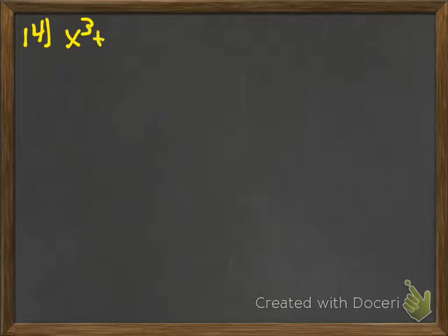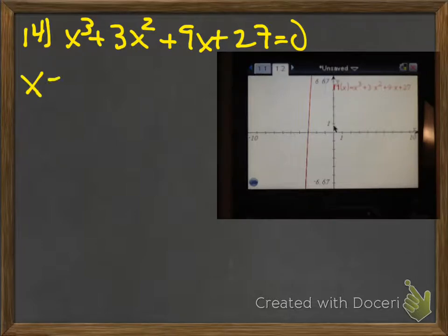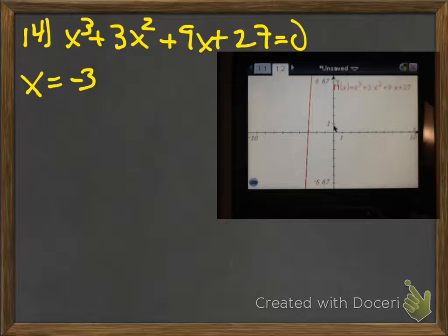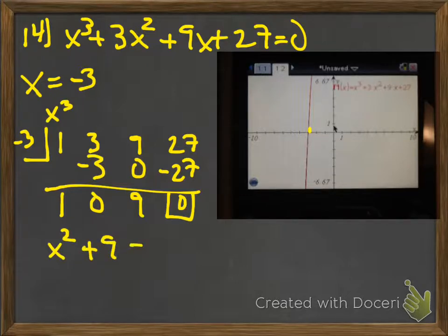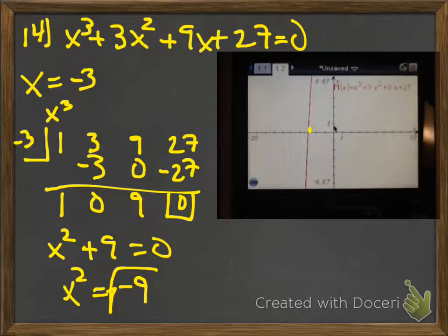Number 14 — graph it. We have x cubed plus 3x squared plus 9x plus 27 equals 0. Looking at the graph, you only see one crossing, meaning there's only one real answer but I need three total. Using synthetic division with negative 3, I get coefficients 1, 0, 9, giving x squared plus 9 equals 0. So x squared equals negative 9. Taking the square root — the square root of 9 is 3, but because of the negative we get plus and minus 3i. Every time you see a negative under a square root, it's an i.